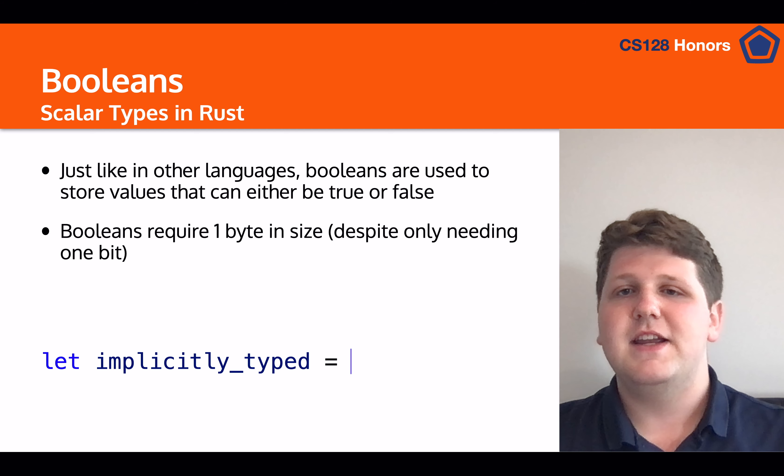And to declare Booleans, to implicitly type, all you do is say let variable name equal to true or false. And then for explicitly typed, you can add the colon and then bool, so that Rust knows for sure that you mean to have a Boolean type there.